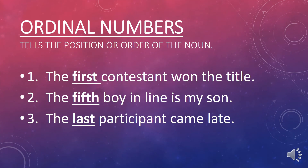Ordinal numbers tell the position or order of the noun. For example: The first contestant won the title. The fifth boy in line is my son. The last participant came late. Ordinal numbers become an adjective if they are followed by a noun.